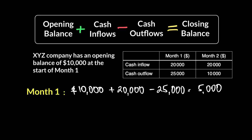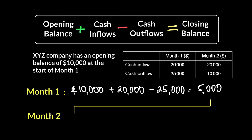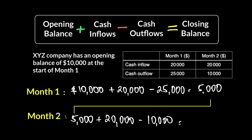But we want to know the closing balance of month two. As you know, the closing balance of month one becomes the opening balance of month two. Since we ended month one with $5,000, we begin month two with $5,000. The opening balance of month two is $5,000, plus a positive cash inflow of $20,000 and a negative of $10,000 — which tells us the company has a positive cash position of $15,000 at the end of month two. $25,000 minus $10,000 equals $15,000 cash.